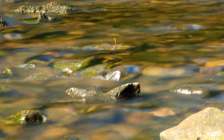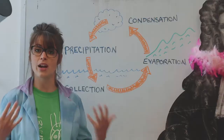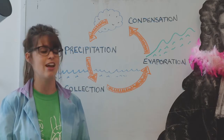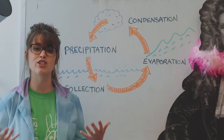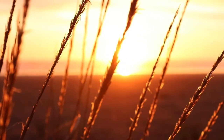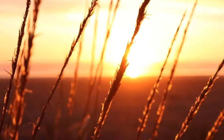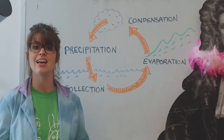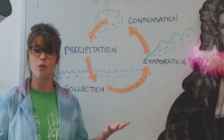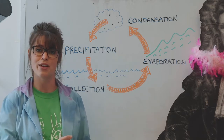Now that the water is collected, it's going to go through another step. This next step is called evaporation. Evaporation is fueled by the sun. When some of that water on Earth heats up enough by the sun, it's going to actually turn into a gas and it's going to rise. This is known as water vapor.